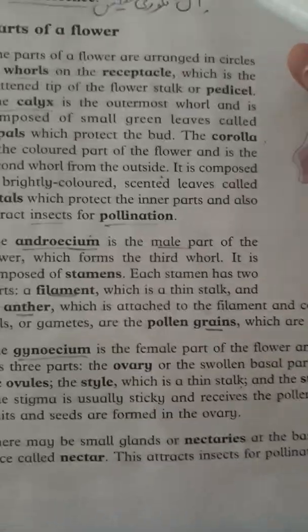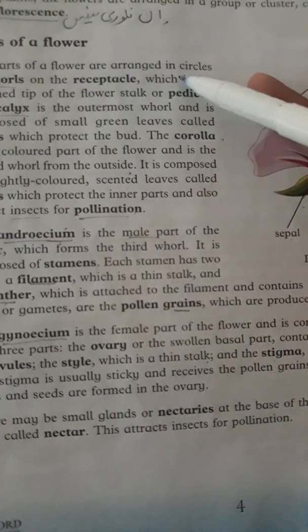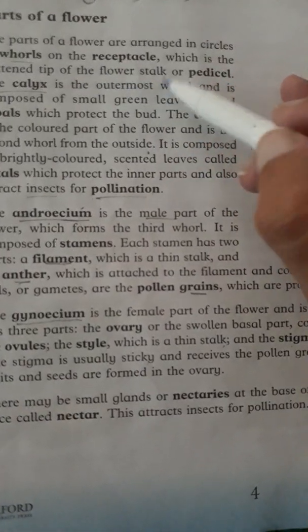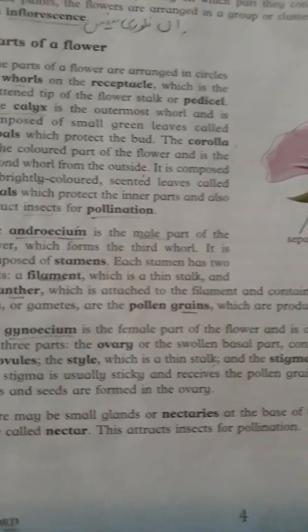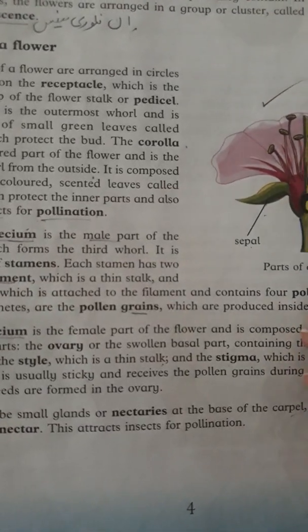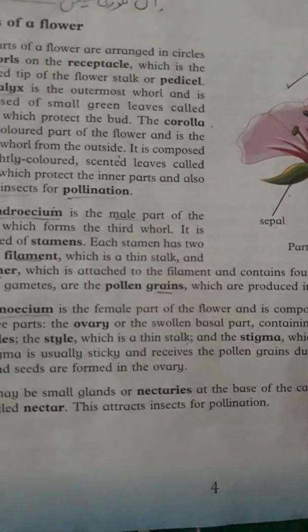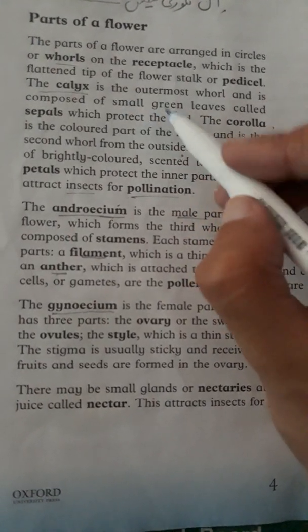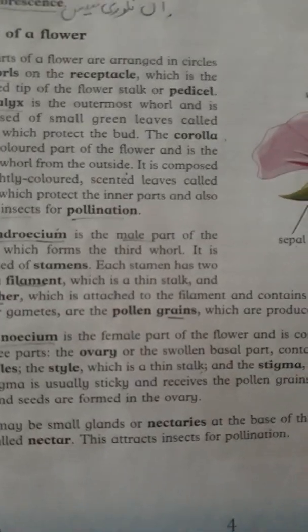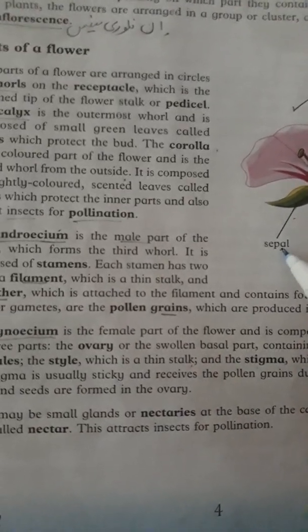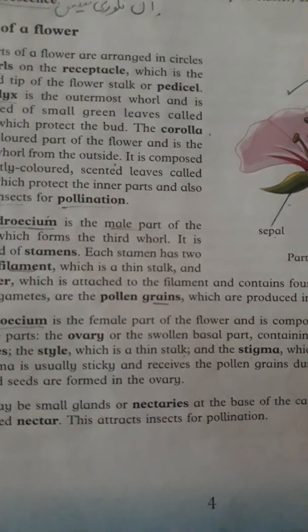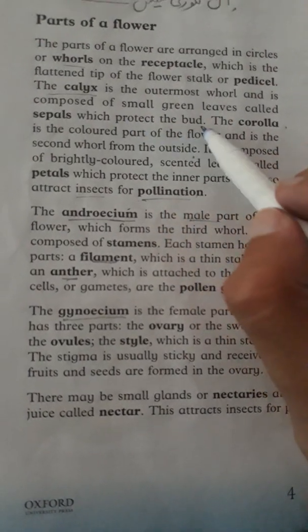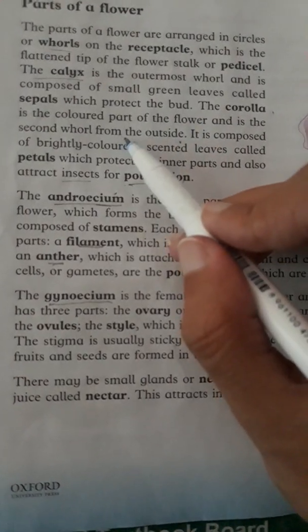Page number four: The parts of the flower are arranged in circles or whorls on the receptacle, which is the flattened tip of the flower stalk or pedicel. All parts of the flower are attached to this receptacle or pedicel. The calyx is the outermost whorl and is composed of small green leaves called sepals, which protect the bud.